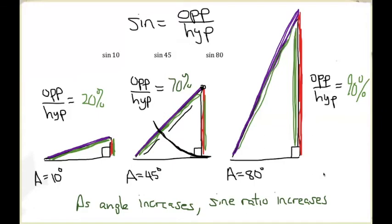Our conclusion is: as the angle increases, the sine ratio increases. That relationship continues to hold as long as we're working within a triangle.